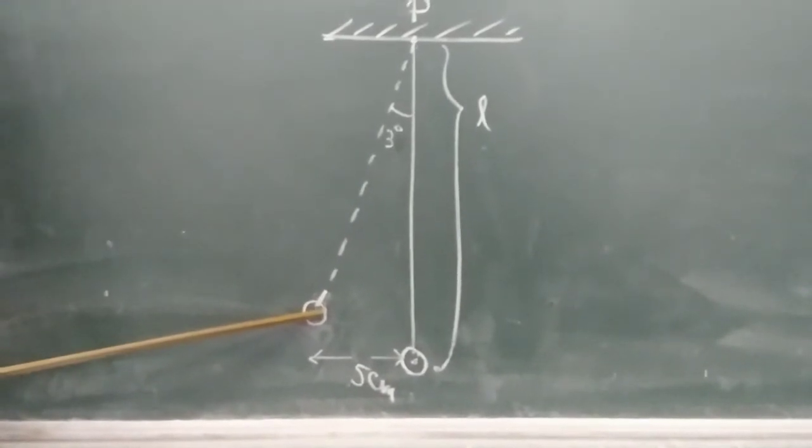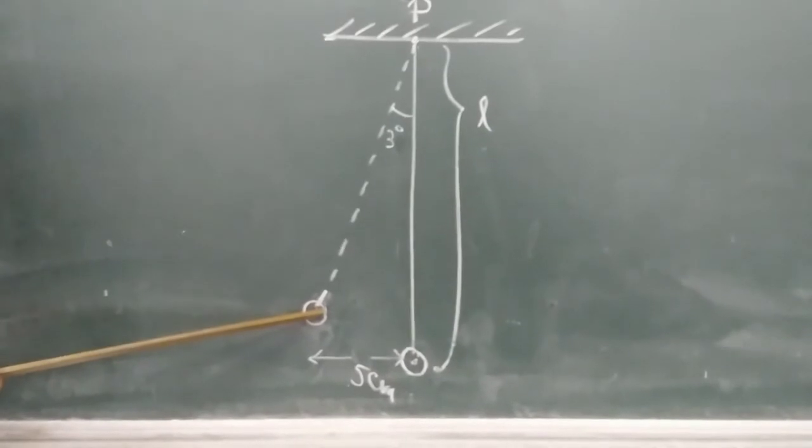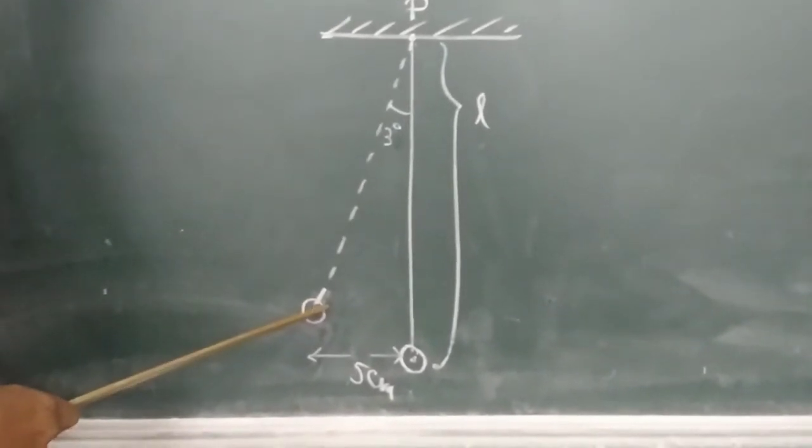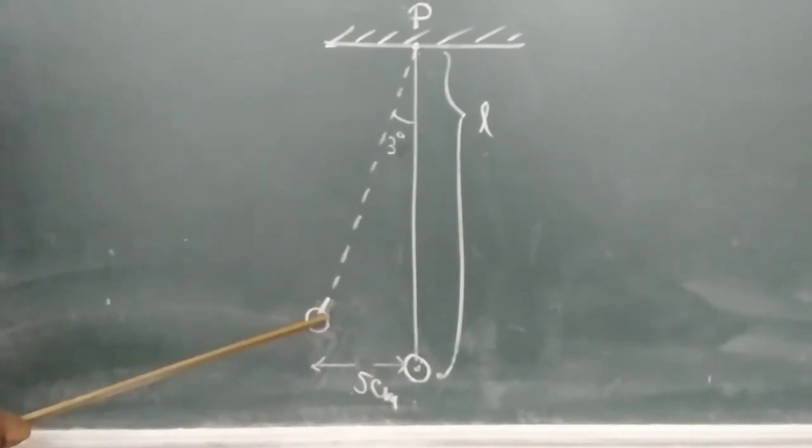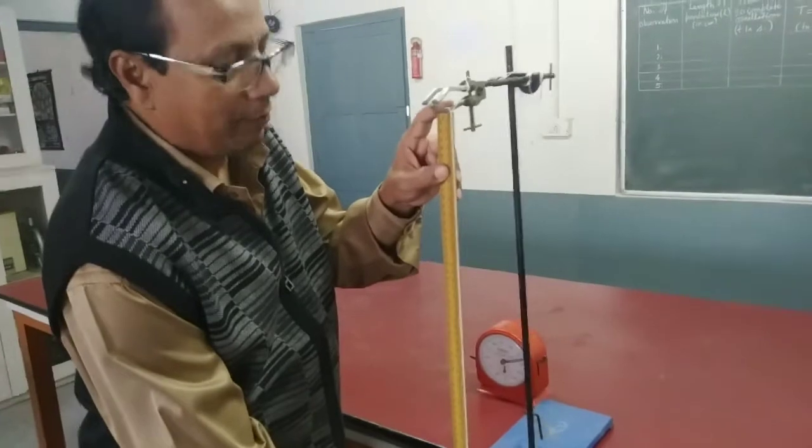So when it comes back to its own position, then only you can say it is one complete oscillation. Like that complete oscillation we will be counting for 20 to 30 oscillations to calculate the time period. For the first observation